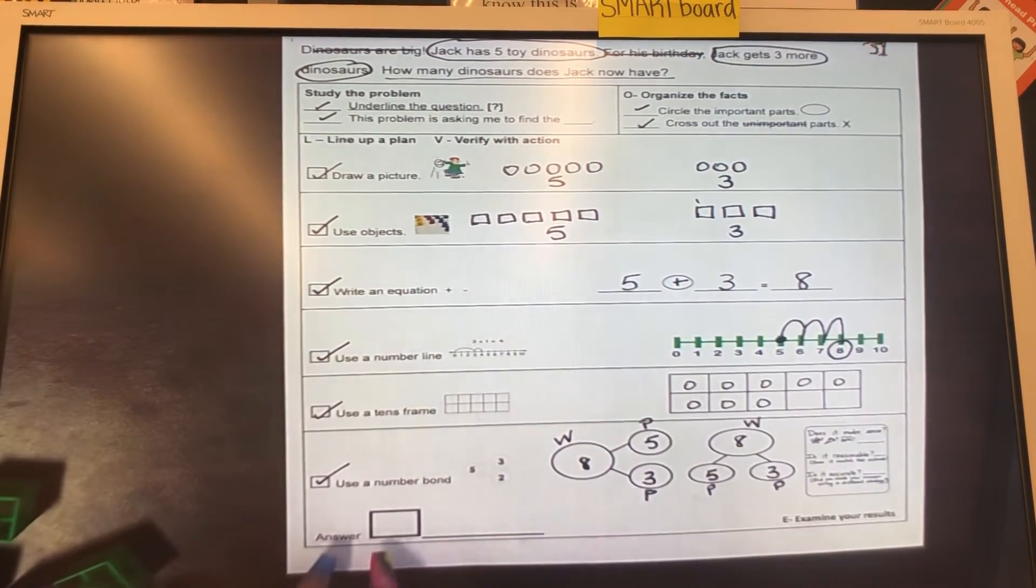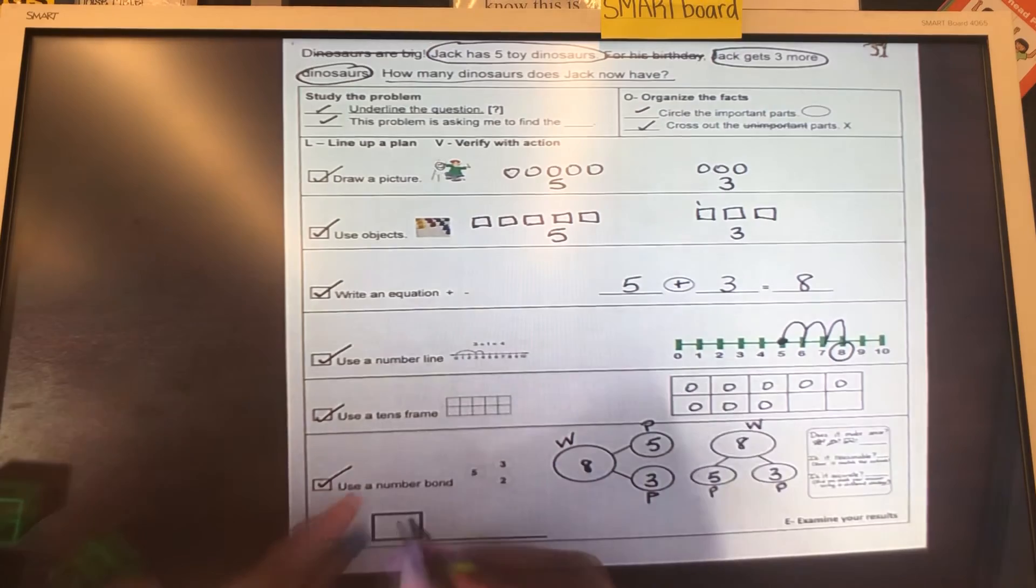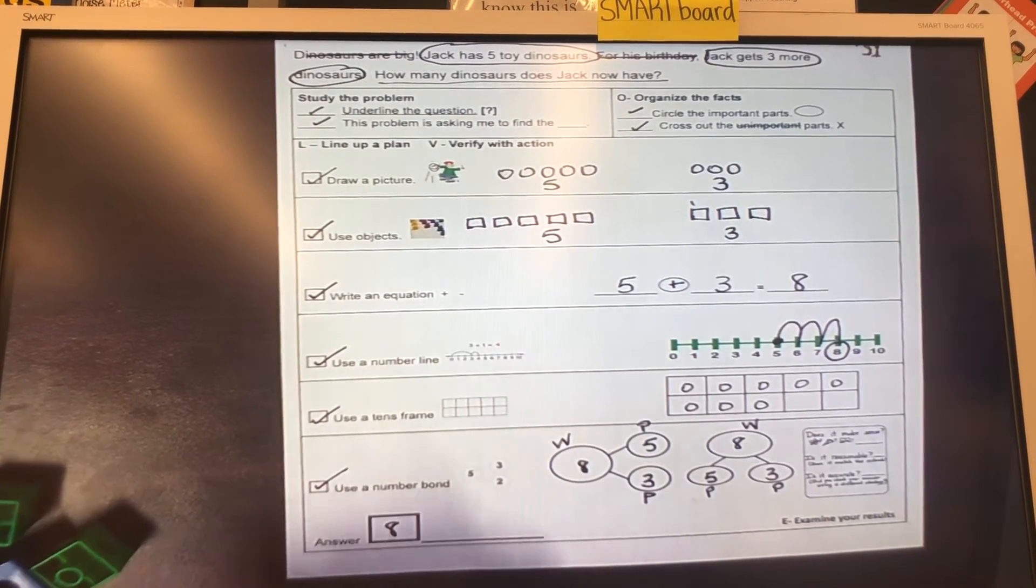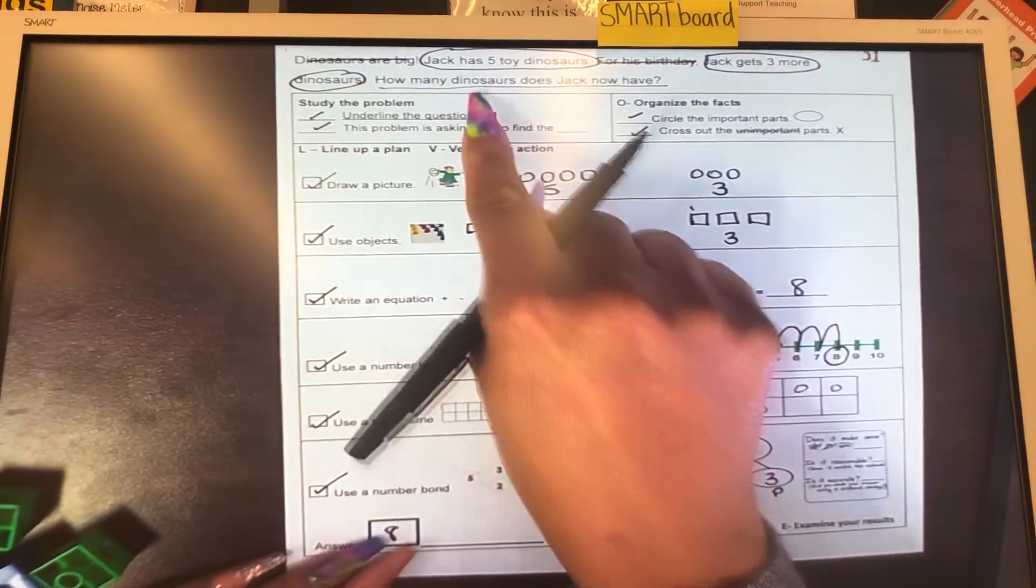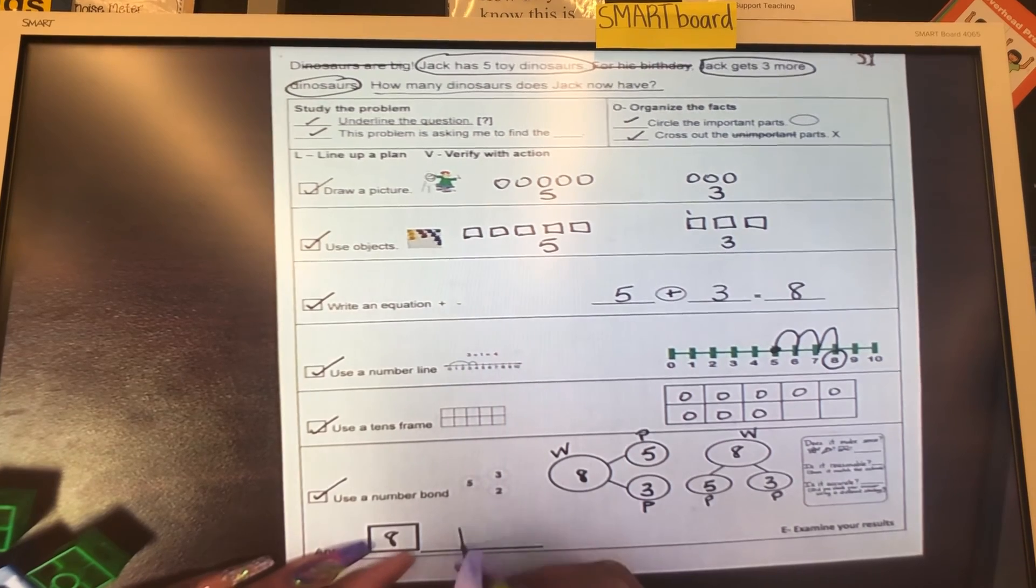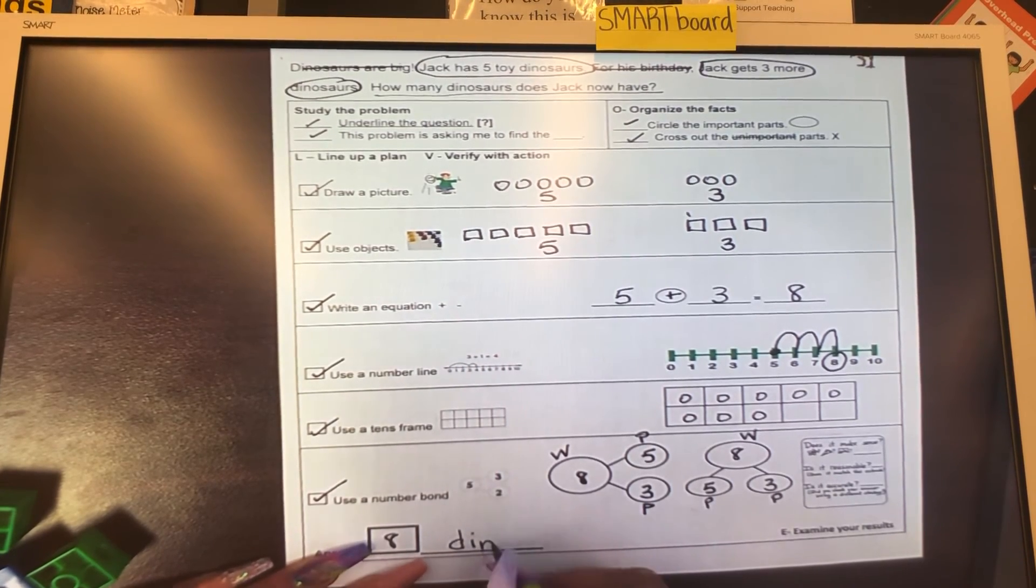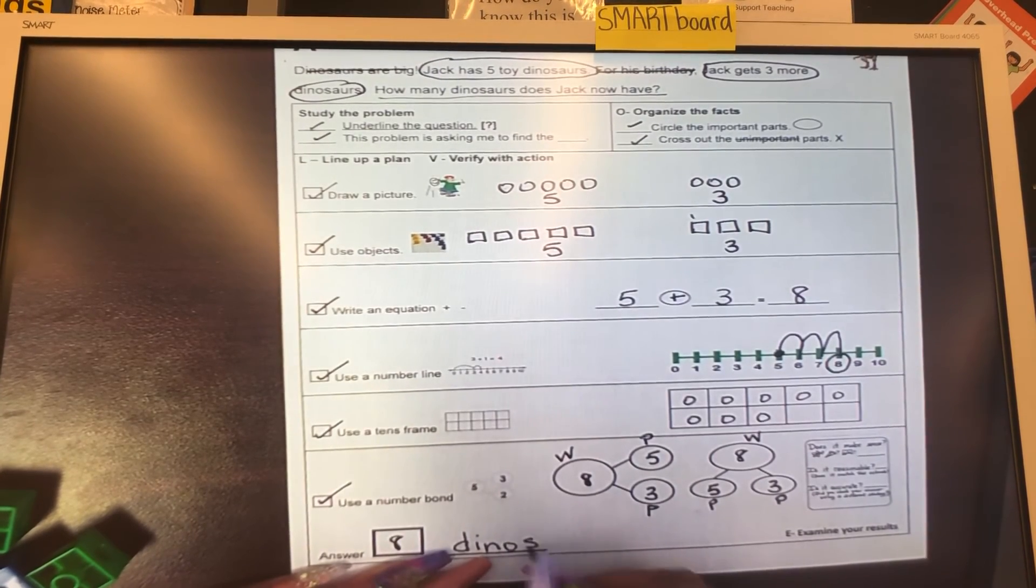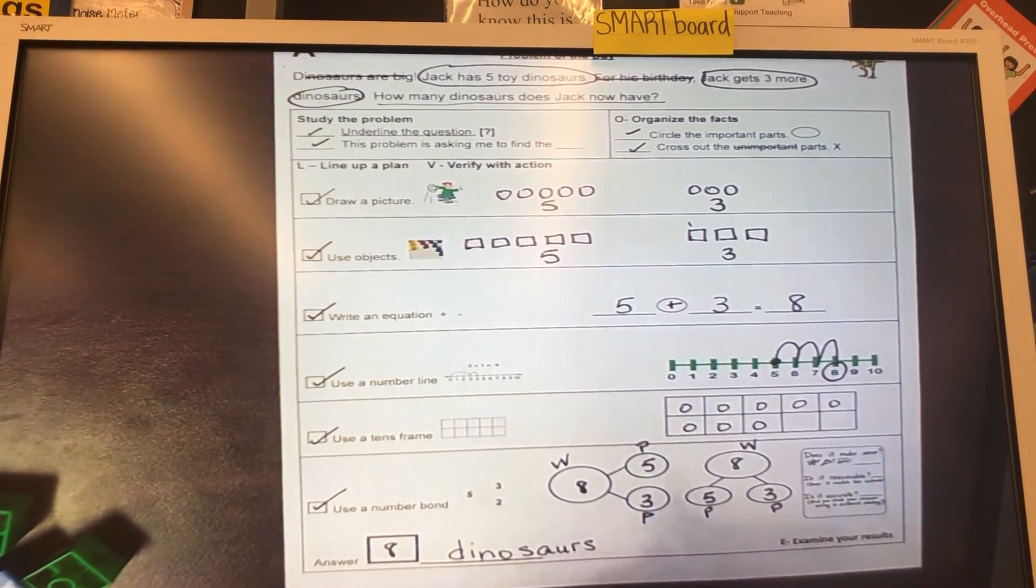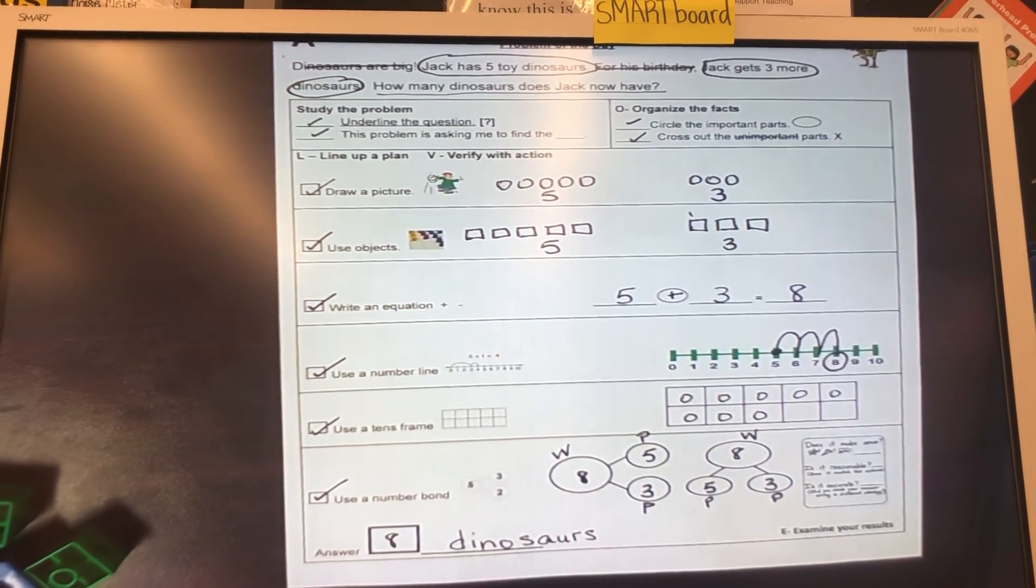So your answer key, don't forget, you got to plug in the number eight. And remember your units is dinosaurs. Dinosaurs is right here. Make sure you write it in. And I'm going to spell as you write: D-I-N-O-S-A-U-R-S. See you guys tomorrow.